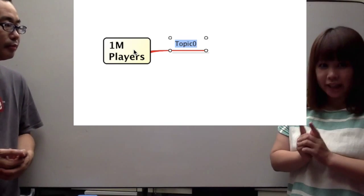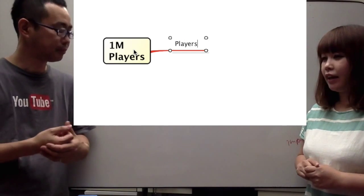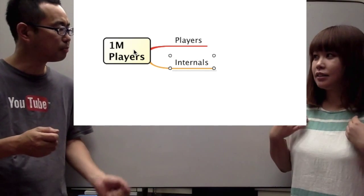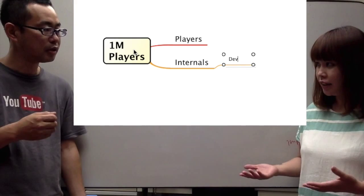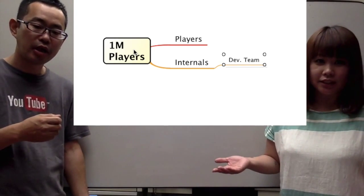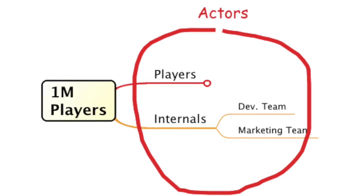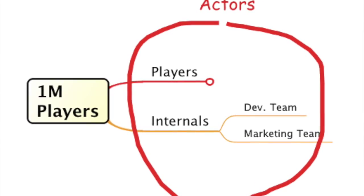Then what kind of people are involved in that achievement goal? First, there will be players. Players, obviously. And second, there will be internals. Internals like? Like us developers of the product, the game, and the marketing team. I see. So actors would be players and internals divided into dev team and marketing. Great. Good.